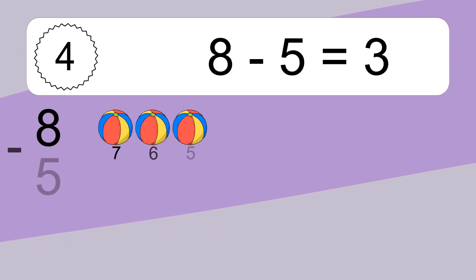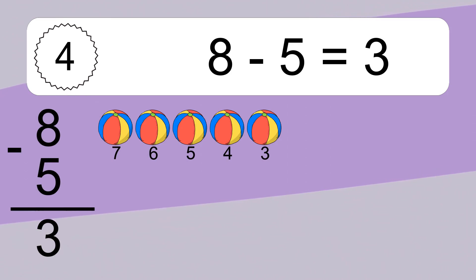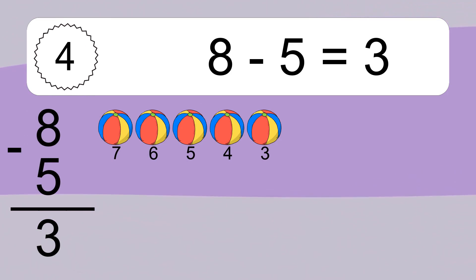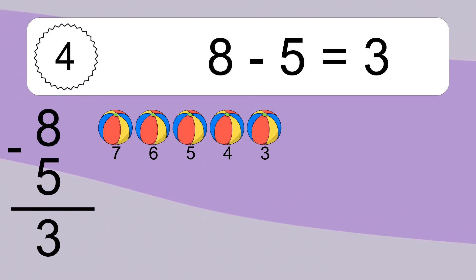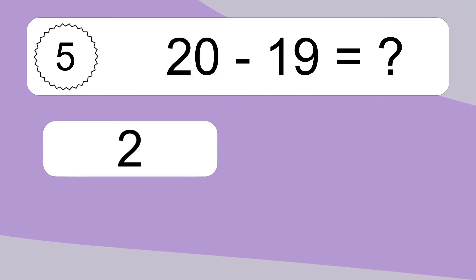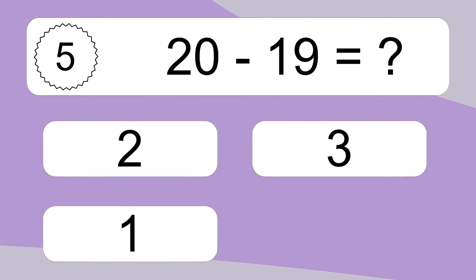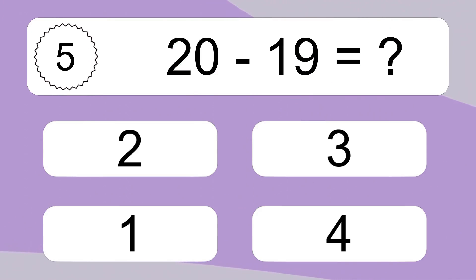8 minus 5 equals what? 8 minus 5 equals 3. Let's count it. 7, 6, 5, 4, 3.